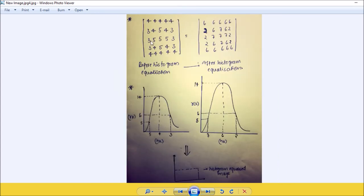See here, this is the matrix before equalization and this is the matrix after equalization. This is the frequency distribution plot before equalization and this is the frequency distribution plot after histogram equalization. So here 4 is replaced by 6, 3 is replaced by 2, 5 is replaced by 7.